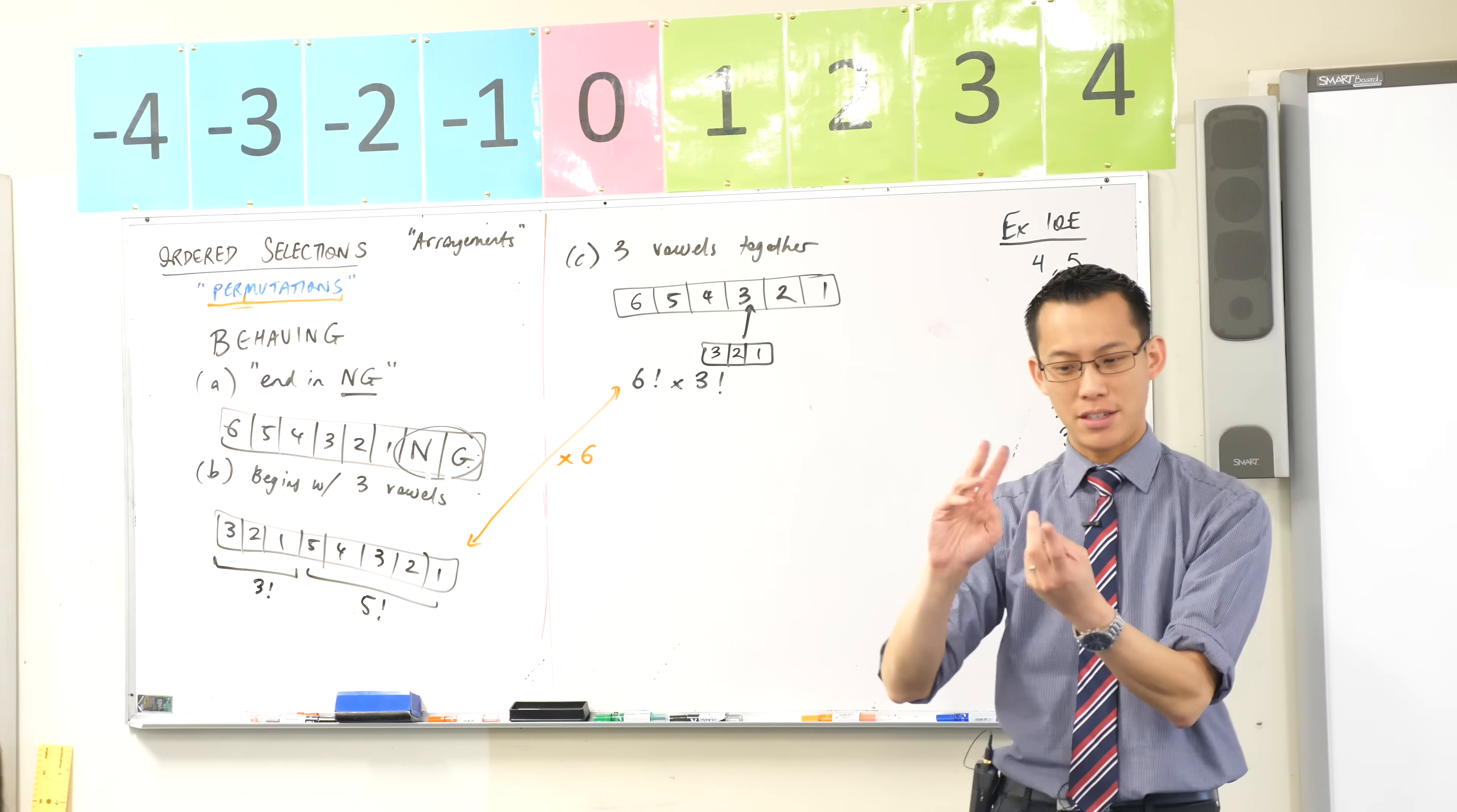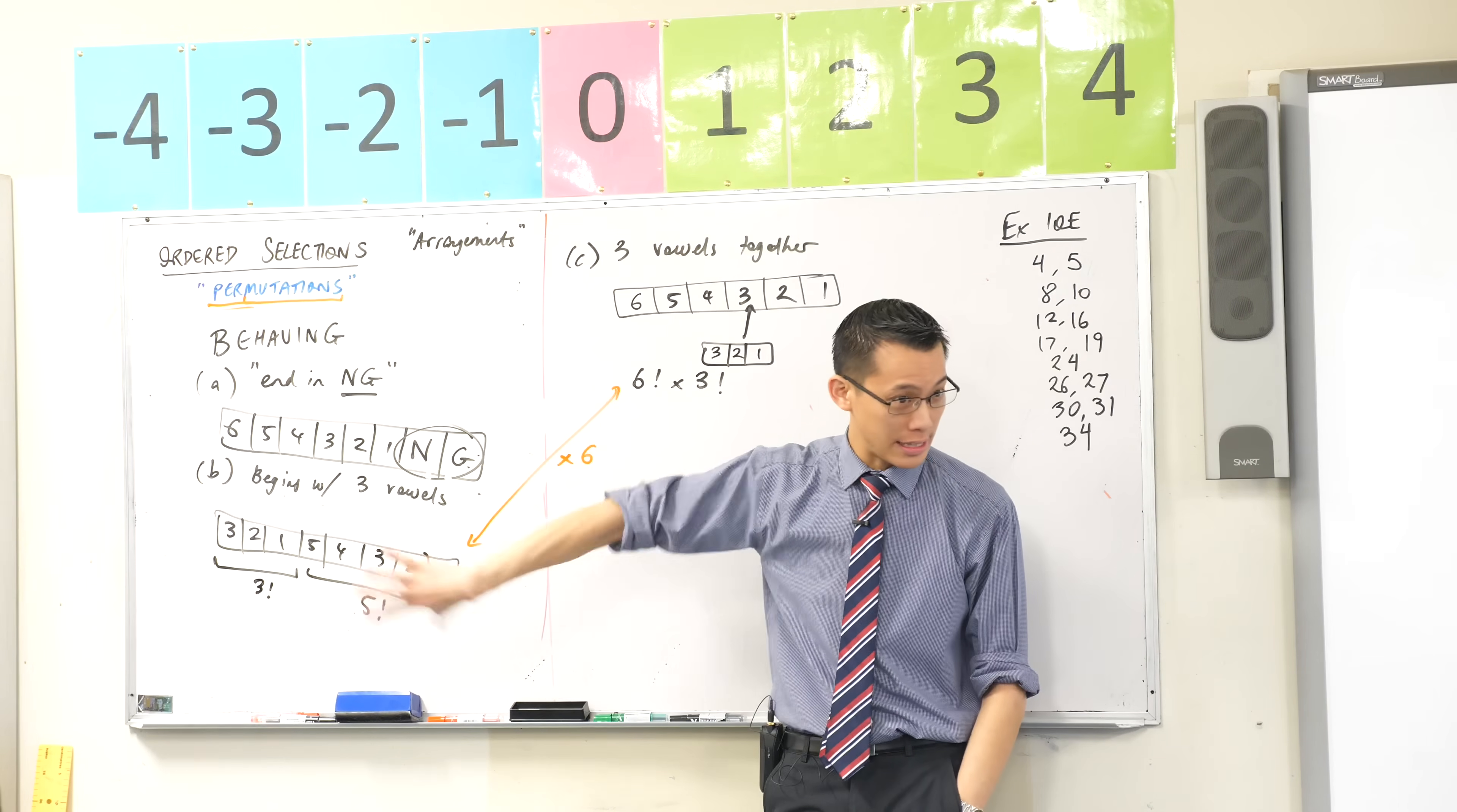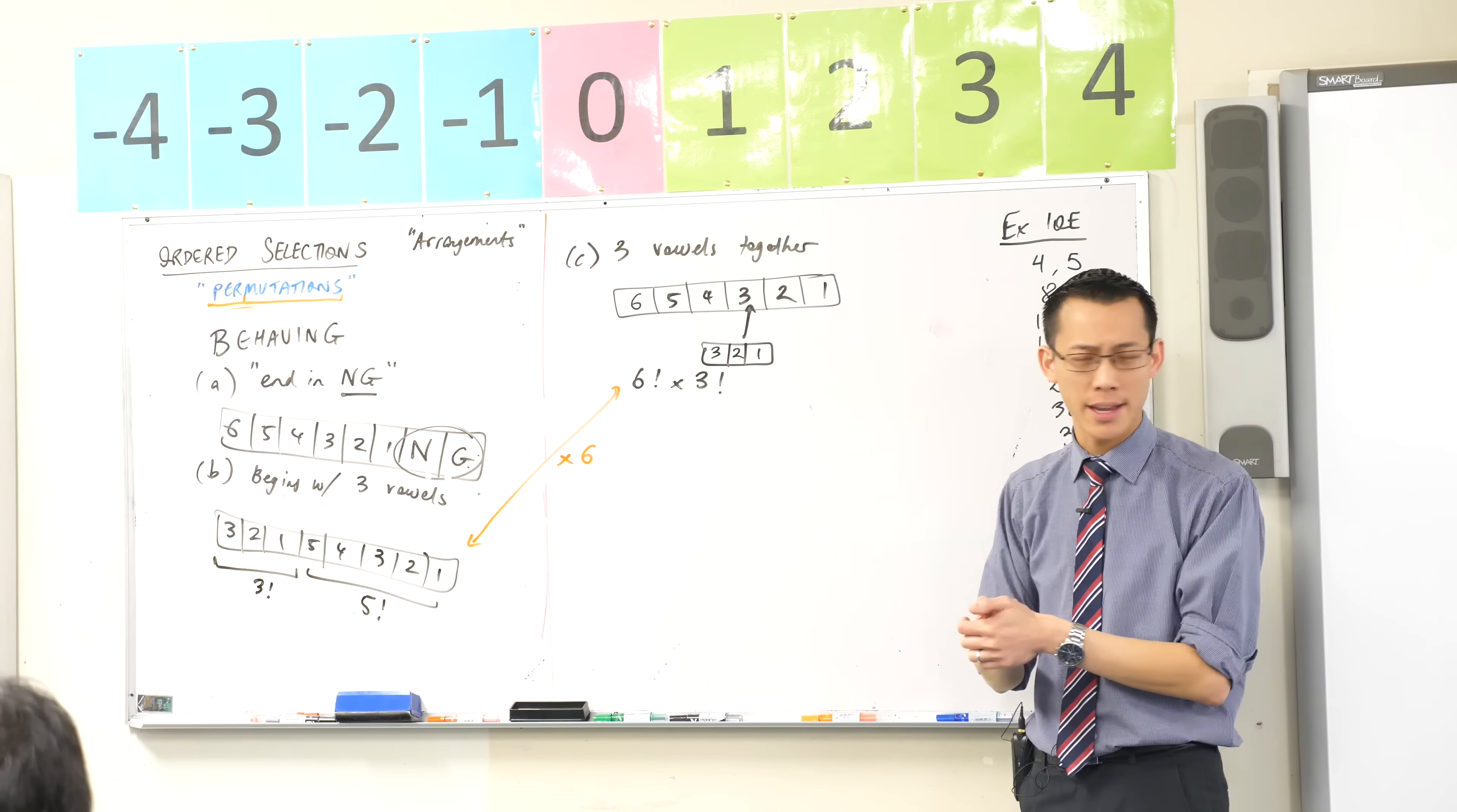So when you, there's two things I want to pull out of that. Number one, first deal with your restrictions. If they give you a condition, they're like, we want to meet this first, then deal with that first and then see what is left. Secondly, if they give you some condition that within itself you can rearrange, then you need to think about that on its own, as its own sub problem within the problem that you're solving.